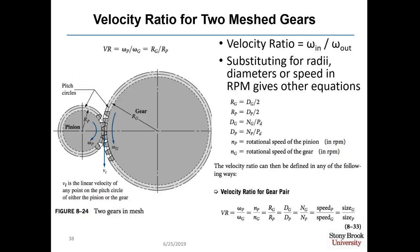The velocity ratio for two meshing gears is the angular velocity of the input gear divided by the angular velocity of the output gear. If you substitute for the radii, diameter, or speeds in RPM, the velocity ratio can be defined in seven different ways — for example, the speed in RPM of the pinion divided by the speed of the gear, or the radius of the gear divided by the radius of the pinion. Make sure you carefully note whether the pinion or gear dimension is in the numerator.